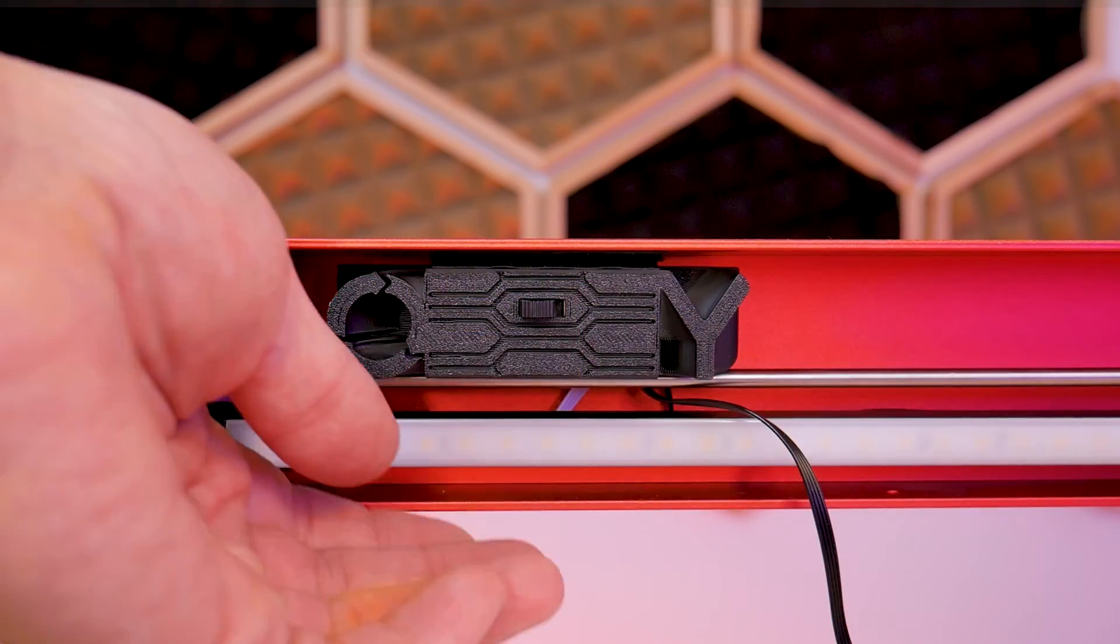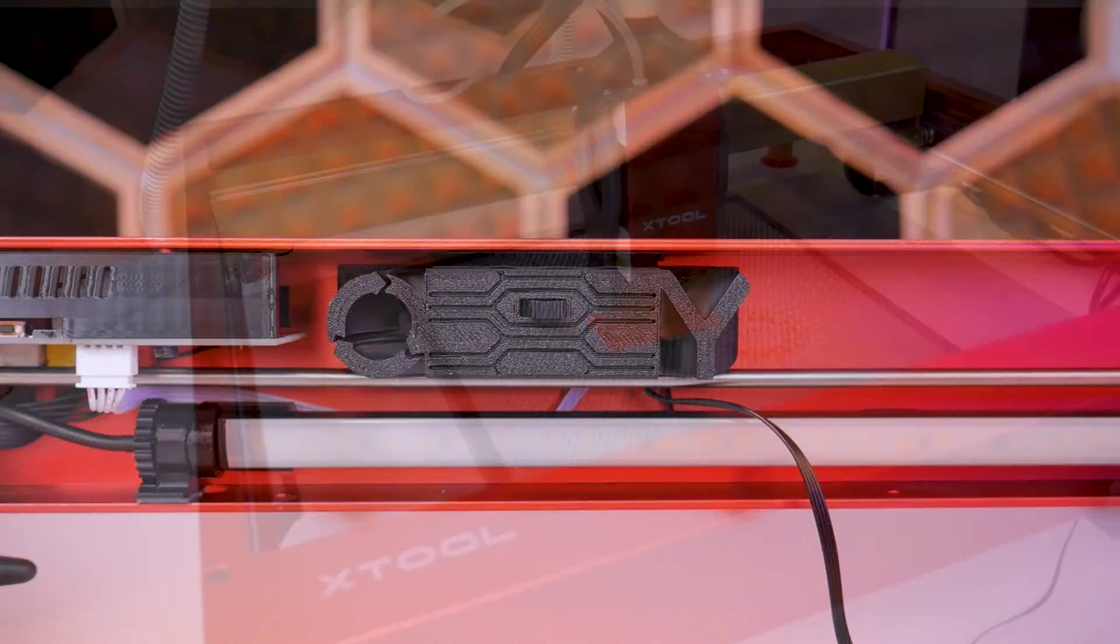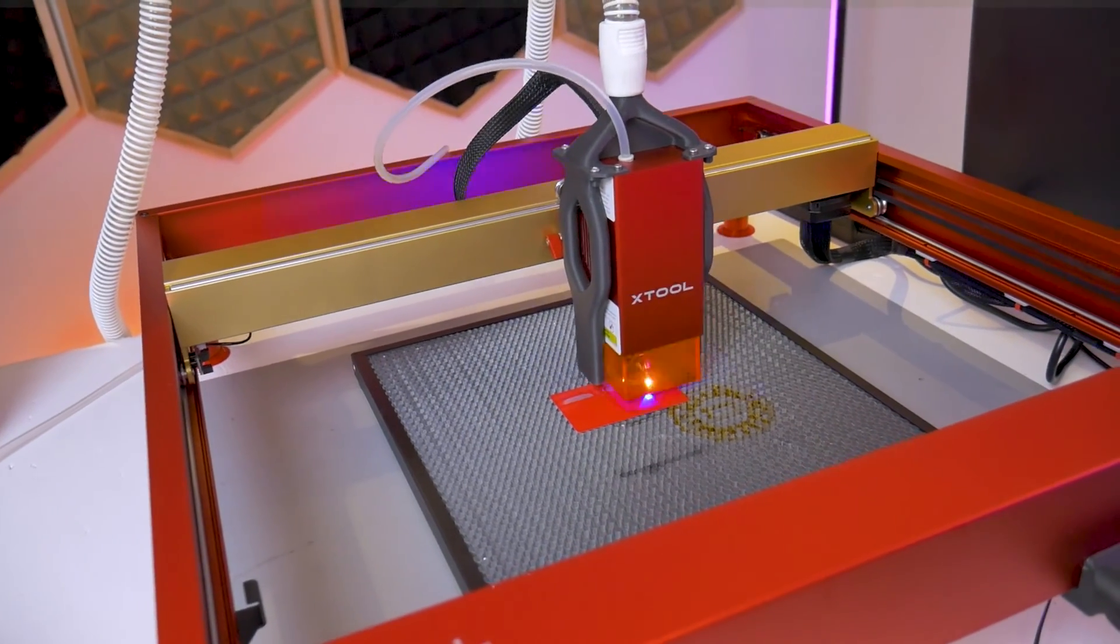When you're ready to change back to the regular XY engraving and cutting mode, with the machine power off flip the switch over to the Y symbol and you're ready to go.